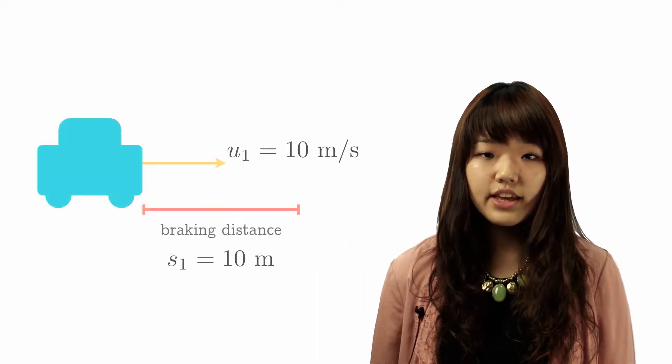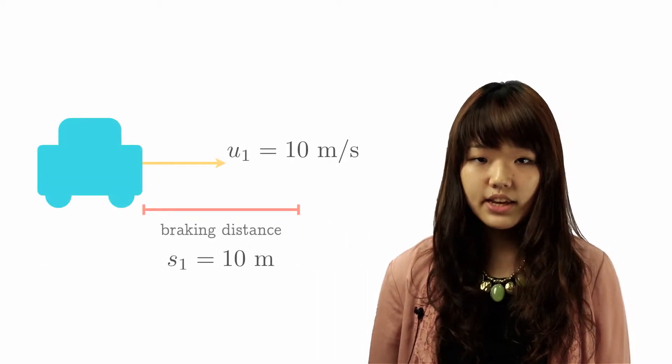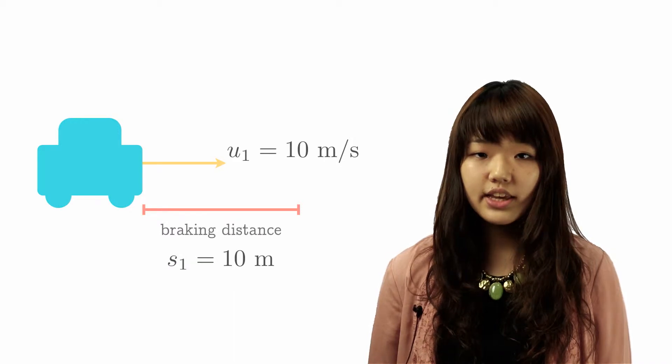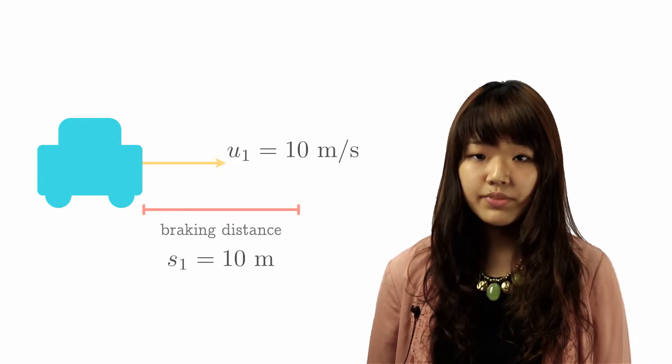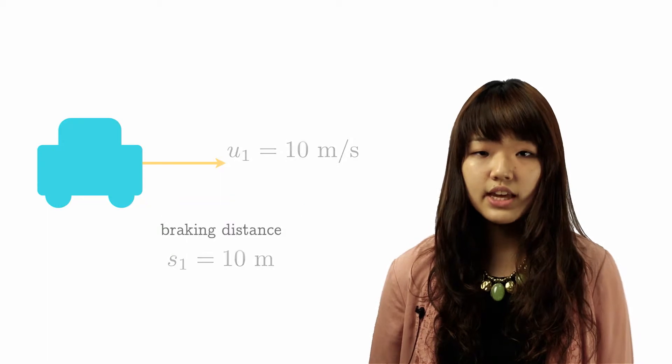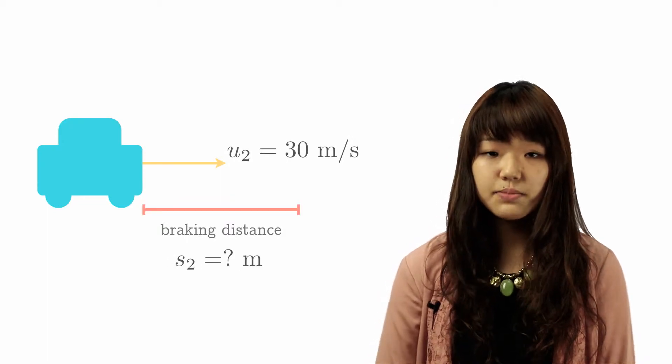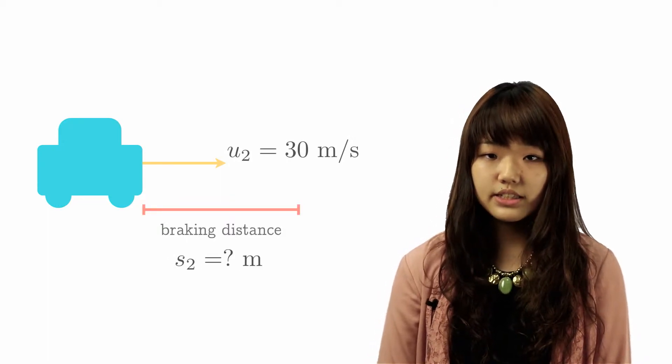A car is traveling at an initial velocity of 10 m/s. I apply a braking force and it comes to a stop in 10 m. If I apply the same braking force to a car traveling at an initial velocity of 30 m/s, what would be the braking distance?